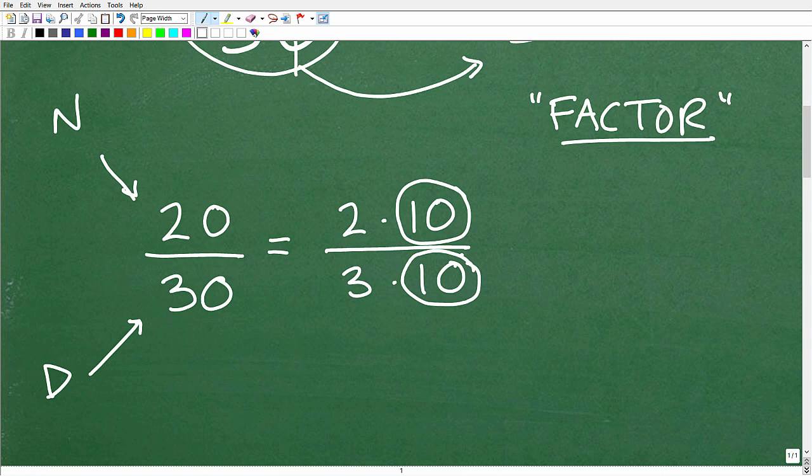So what we try to do is break up these individual numbers in a way that we have like factors. In other words, what are like factors? It's the same factor in both the numerator and denominator. So here we have a 10 sitting up here in the numerator, and here we have a 10 down here in the denominator. And this is awesome, because this unlocks our ability to simplify this fraction.